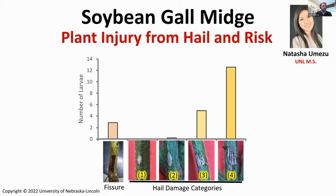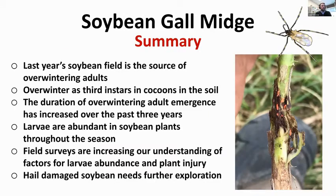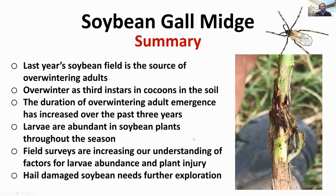If you're scouting fields or you have late season hail — say late July, early August — this is something to pay attention to in terms of your scouting efforts. Summary: last year's soybean field is the source for overwintering adults. They overwinter as third instar larvae in silken cocoons in the soil. The duration of emergence is increasing and has been for the last three years, posing a management challenge. Larvae are abundant in soybeans within six to seven days after initial adult capture. Field surveys are increasing our understanding, and hail damage interactions with soybean gall midge are worth adding to your scouting profile.